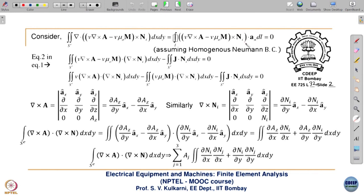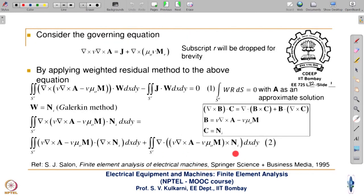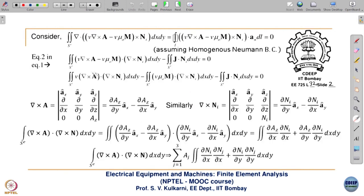If there is a homogeneous Neumann condition on the outermost boundary, that term goes to zero, and we are left with the remaining two terms. We had split the expression into two parts; one is made zero, so we are left with these two terms. The expression is further split: del cross A dotted with this, and then this term dotted with del cross N_i — this part, plus the other term as it is.